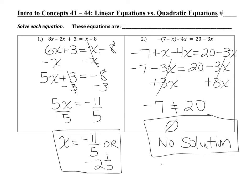If you did not get 'no solution' for number two, it might be because you forgot to collect. I simplified by distributing, then combined like terms and got negative 3x. Since I have negative 3x on both sides, when I collect the variables, they cancel out to leave a statement that is false. When variables cancel out and leave a false statement, there's no solution — no value of x makes the equation true.